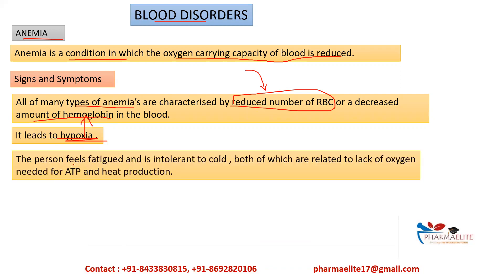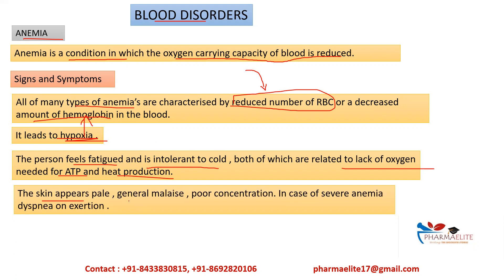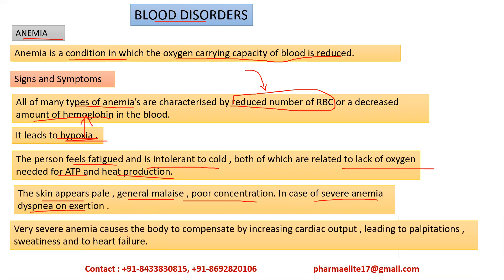The symptoms of anemia include fatigue, tiredness, and intolerance to cold — both due to the lack of oxygen needed for ATP and heat production. Other symptoms include pale skin, general malaise, and poor concentration. In severe anemia, dyspnea — shortness of breath — can also occur. Very severe anemia causes the blood to compensate by increasing cardiac output, leading to palpitations, sweatiness, and even heart failure.